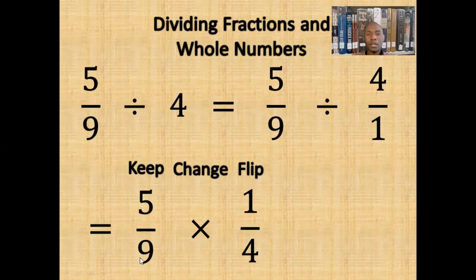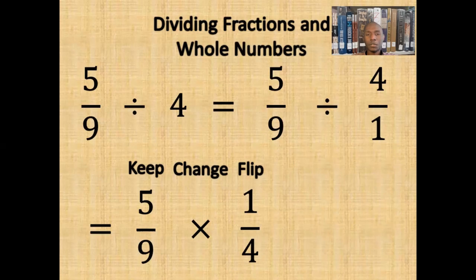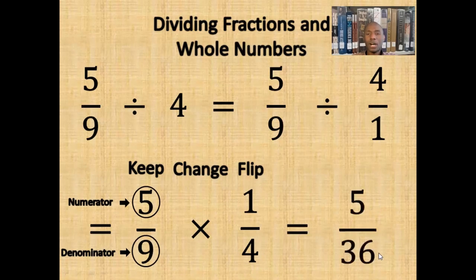Now, we would multiply fractions. For a review on how to multiply fractions, please see the link in the description. To multiply fractions, we would multiply the numerator and the denominator of both fractions. If we multiply the numerators together and the denominators together, we get 5 over 36.